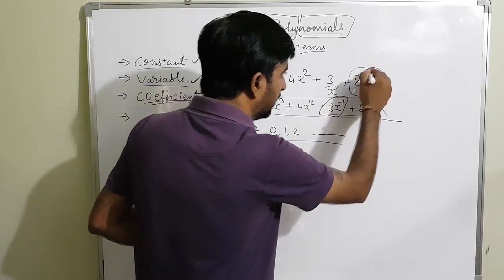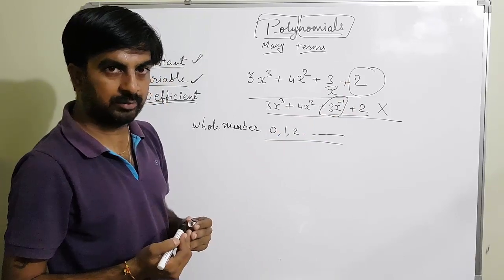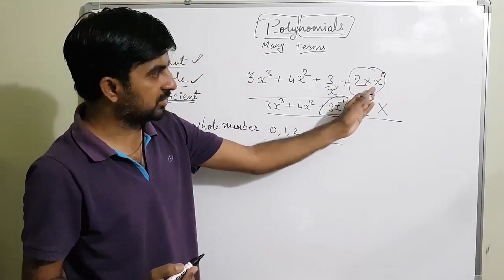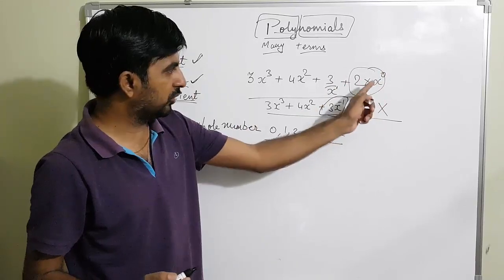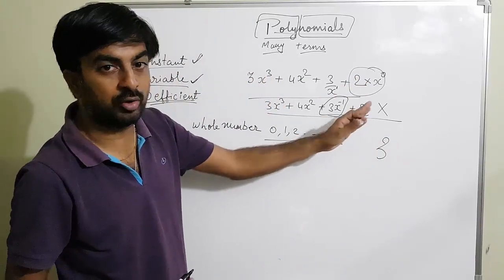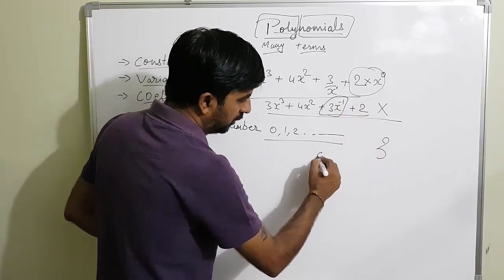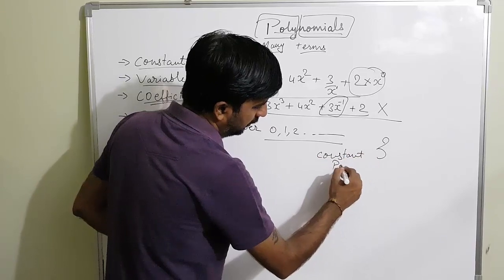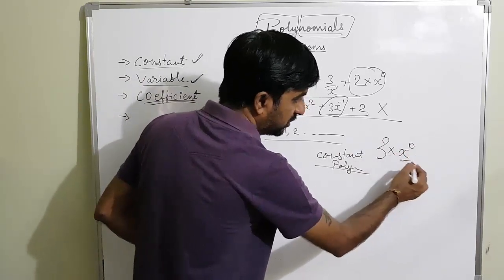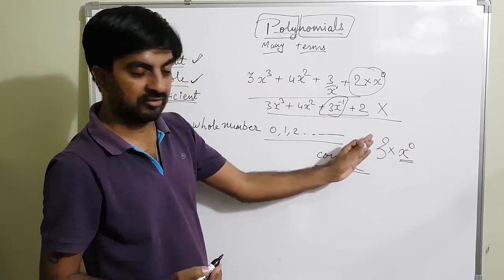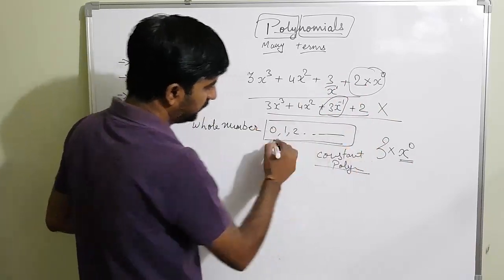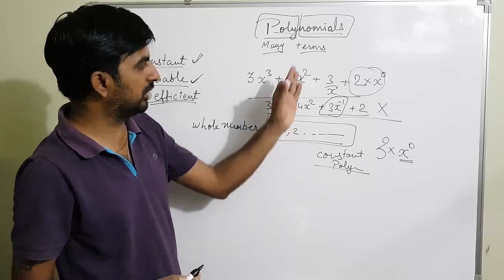But if there is no x and only a constant like 2, that term is still part of a polynomial because it contains x raised to 0, which we are not showing. We know anything raised to 0 is 1, so 2 is actually 2 times x raised to 0. Whenever only a constant is given, it is also a polynomial — the special name given to it is constant polynomial.